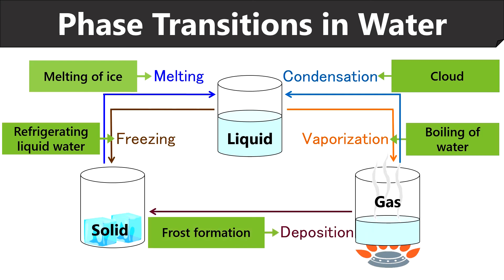Deposition is also called desublimation or gas to solid phase transition. A very common example of deposition is frost formation where water vapors in the atmosphere meet a temperature below 0 degrees Celsius to form frost or tiny ice-like crystals. Sublimation is a solid to gas phase transition. Dry ice is a good example of sublimation that sublimes at room temperature.